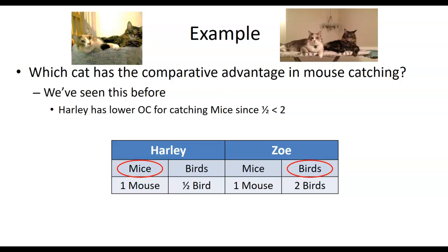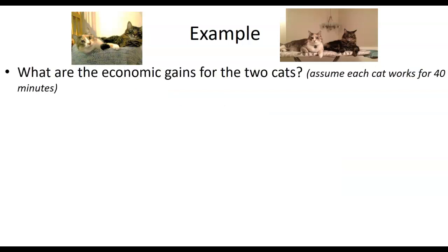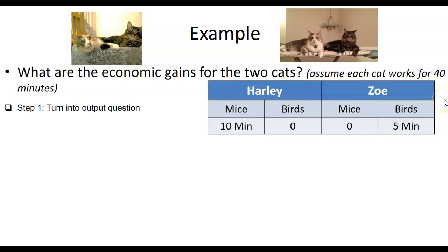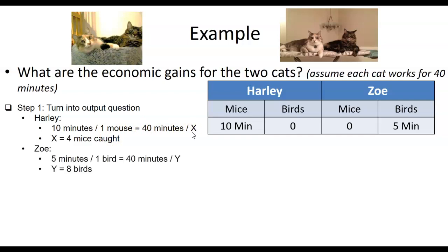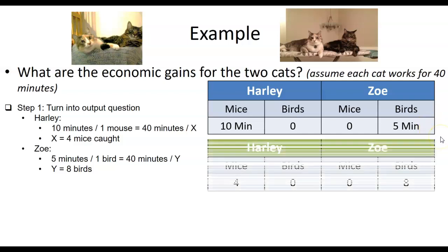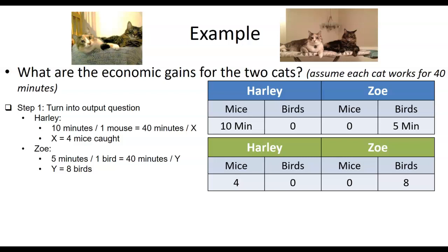Now, this is where College Board typically pauses. You might do terms of trade, but usually you don't go into economic gains. With that said, I'm still going to go through that. So a typical example would be something like, let's say the two cats had 40 minutes. What would they have gained by trading with each other? First thing, turn the question into an output question. So I went ahead and these are the specialized numbers. Harley's doing mice. Zoe's doing birds. If 10 minutes catches one mouse, in 40 minutes, how many mice could Harley have caught? Answer, four. For Zoe, it takes her five minutes to catch one bird. She gets 40 minutes. Therefore, how many birds could she have caught? Eight.